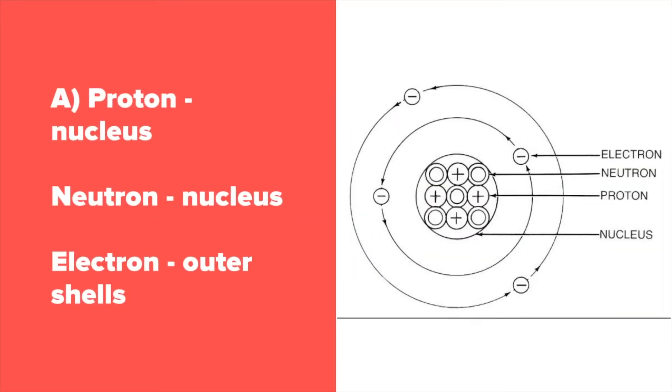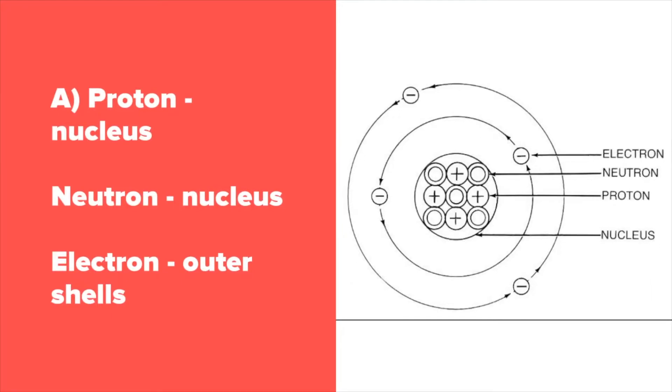Both protons and neutrons are found in the nucleus, while electrons are found in the outer shells.